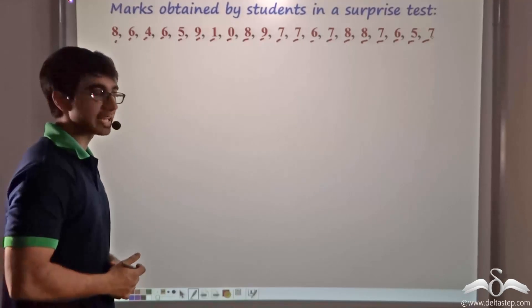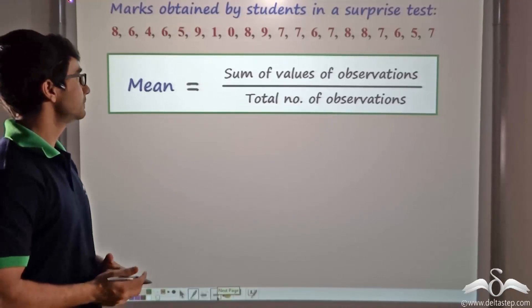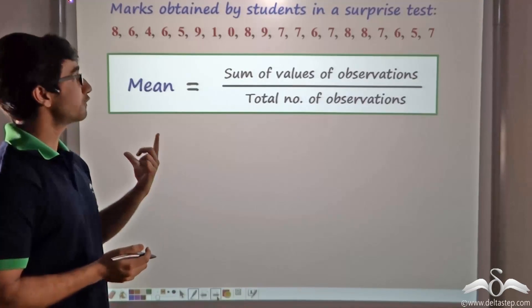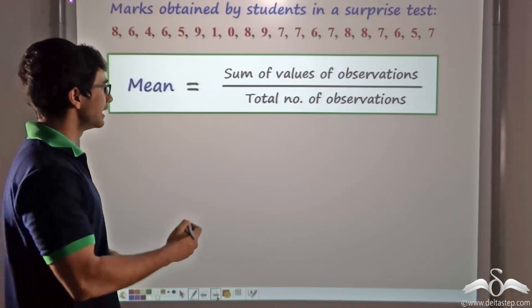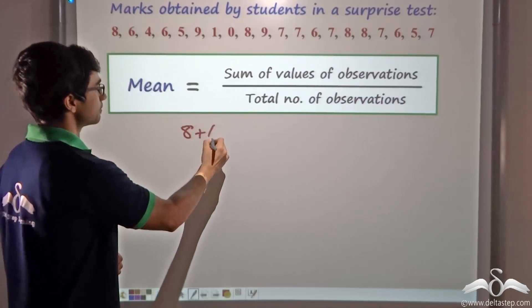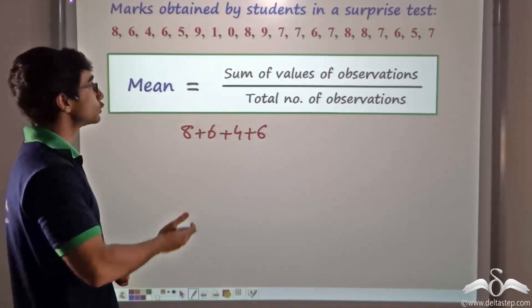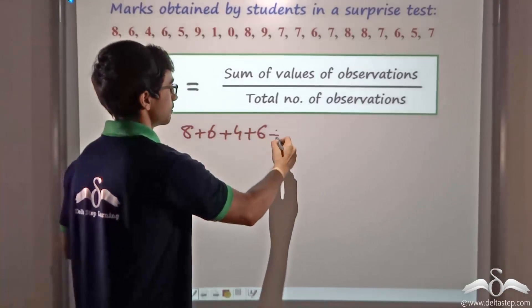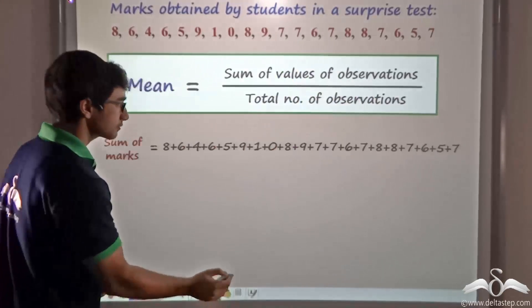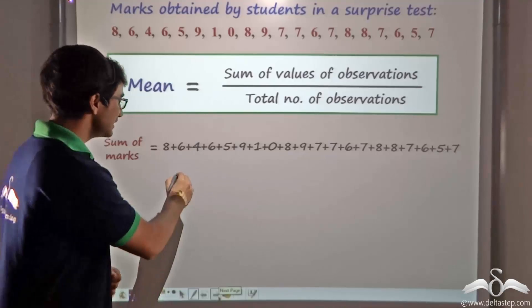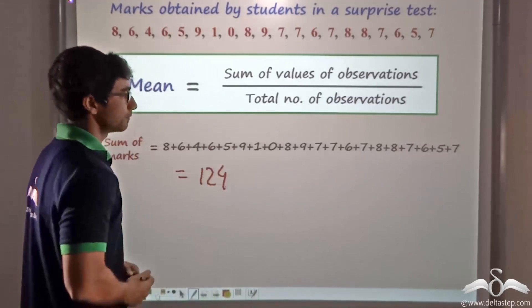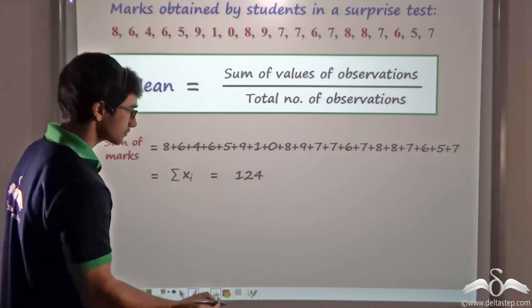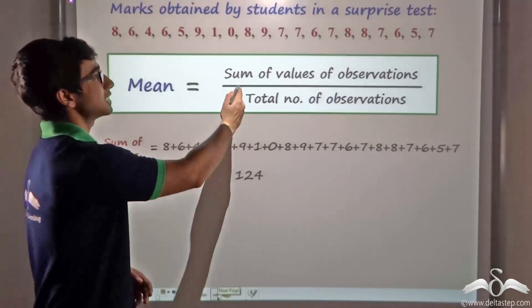As mentioned previously, mean is nothing but the sum of values of the observations divided by the total number of observations. To find the sum of values of these observations, I simply add them one by one, going from left to right so that I don't miss any particular value: 8 plus 6 plus 4 plus 6 plus 5 plus 9 and so on. These values add up to 124. You can add these values yourself and verify that they add up to 124.